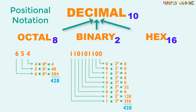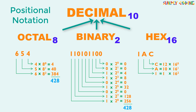Similarly, to convert hexadecimal to decimal, we use the same method. We write down the hexadecimal number 1AC vertically with its least significant digit first. We first write the decimal equivalent of A and C, which is 10 and 12 respectively. Then we multiply them by 16 raised to the power of its place value. After multiplying each digit with its corresponding weight, we sum them up. The resulting number 428 is the decimal equivalent of the hexadecimal number.